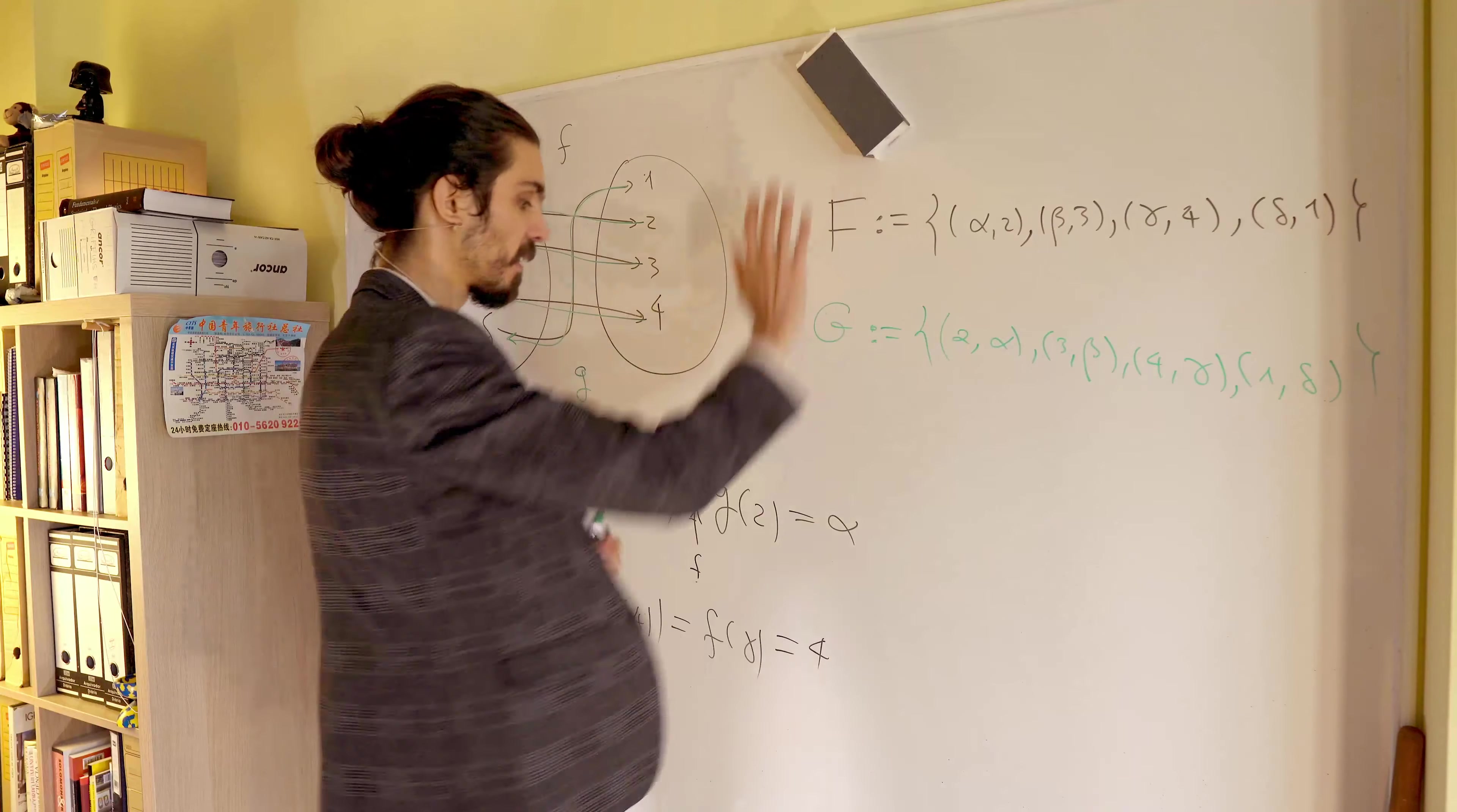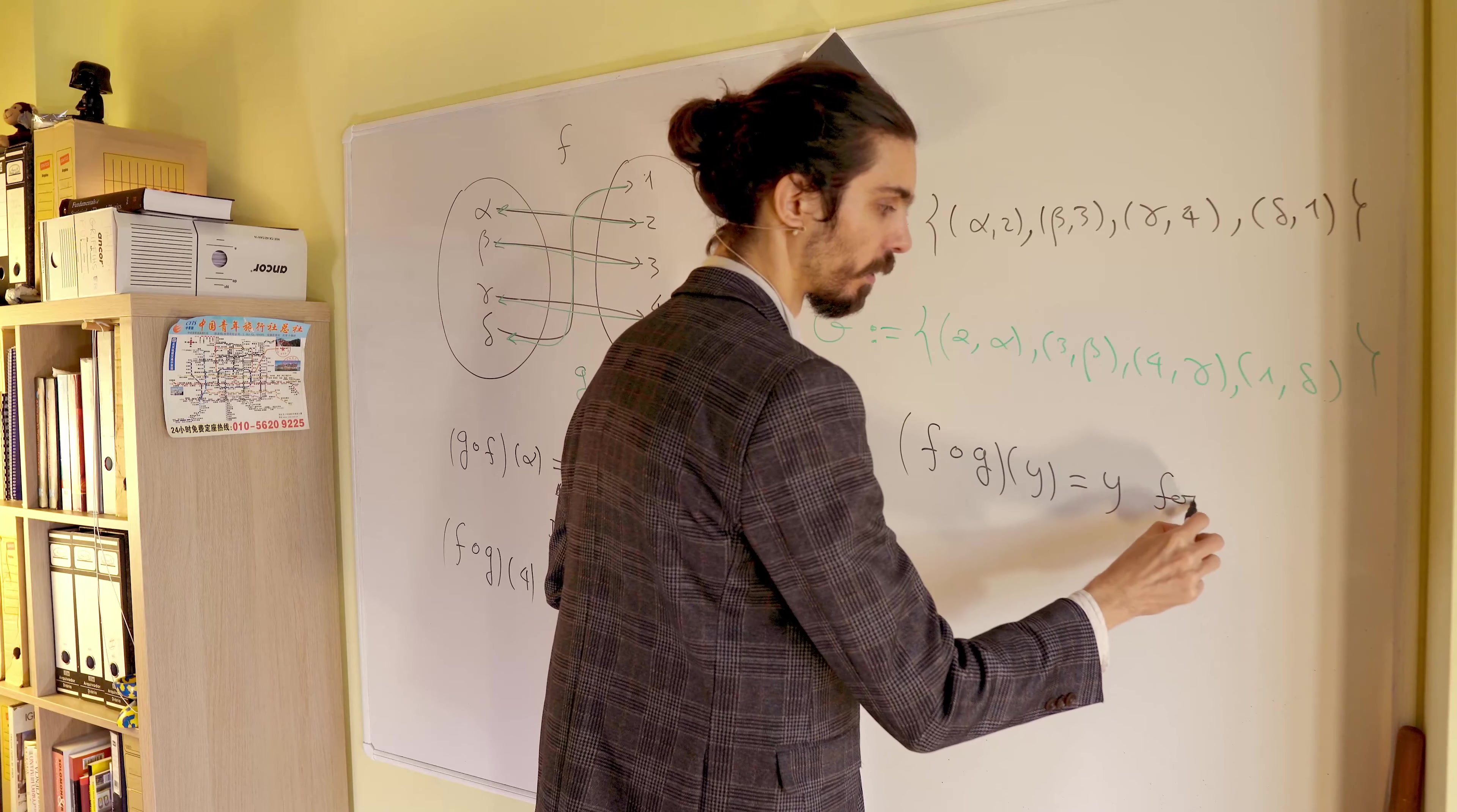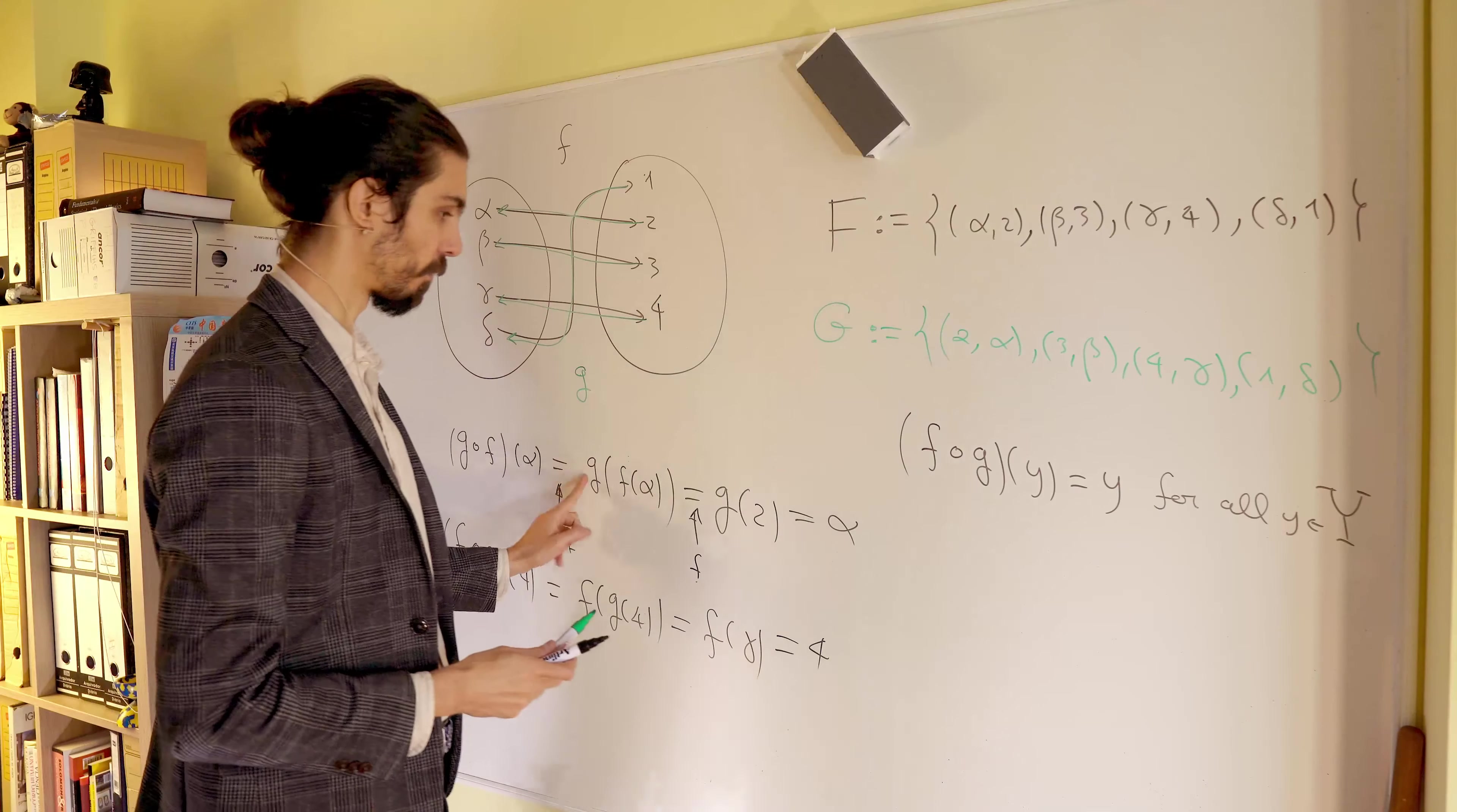Now, you can already see that this is a general trend on the entire thing. So, in general, we write that f of g of y is equal to y for all y in big Y. And big Y is this thing here. Okay? So this thing is true for every single y that we choose. In particular, it was true for 4 here.